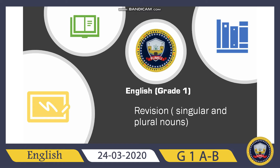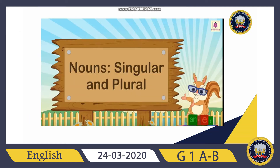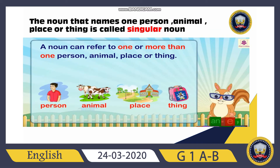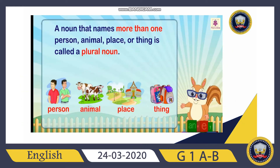Okay, do you remember we talked about nouns? Very good. A noun can refer to one or more than one person, animal, place, or thing. The noun that names one person, one animal, one place, or one thing is called a singular noun. For example: one boy, one cat, one hospital, one bag. These are singular nouns.